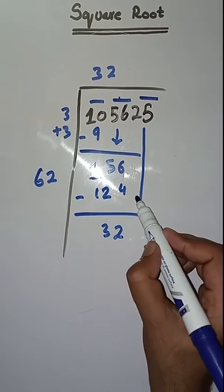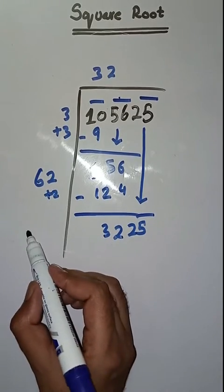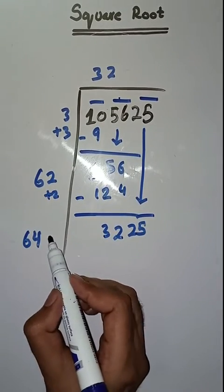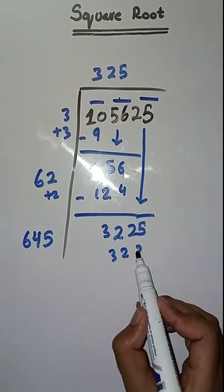Next pair is 25. We bring it down. Here we do 62 plus 2 which is equal to 64. So we will take a number 5. 645 times 5 is 3225.